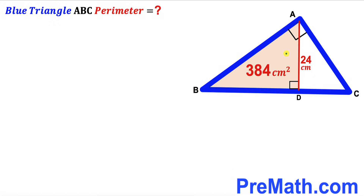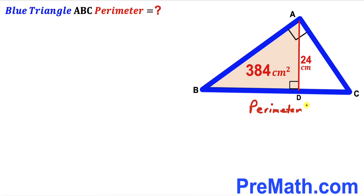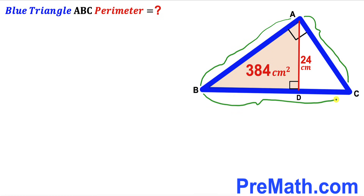Welcome to Pre-Math. In this video we have a blue right triangle ABC. AD is the perpendicular on base BC, with the length of perpendicular AD being 24 centimeters. Furthermore, the area of right triangle ABD has been given as 384 square centimeters. Our task is to calculate the perimeter of this blue triangle ABC — the sum of side lengths AB, AC, and BC.